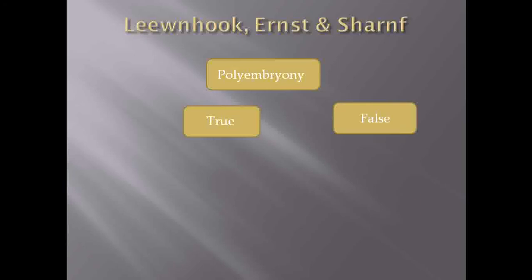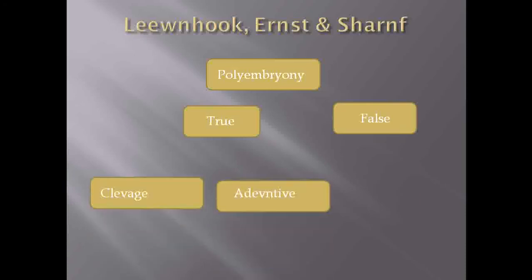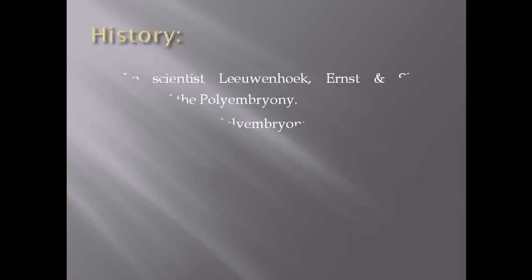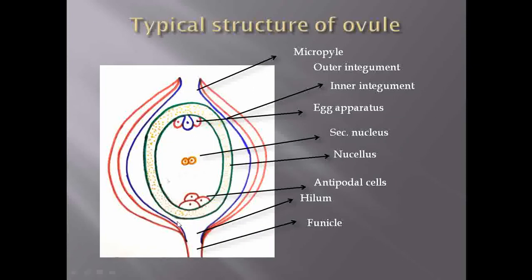Now studying the classification of polyembryony according to Leavenhook, Ernst, and Schnarf — these scientists categorized polyembryony into two types: true polyembryony and false polyembryony. True polyembryony is further categorized into cleavage polyembryony and adventive polyembryony. To understand true and false polyembryony, we need the typical structure of the ovule.